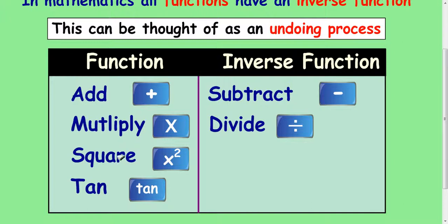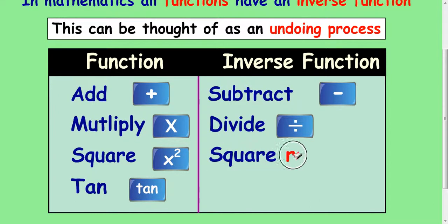The undoing process for squaring a number — since you've just done Pythagoras' theorem, you should be familiar with this — the undoing process for squaring a number is square rooting.